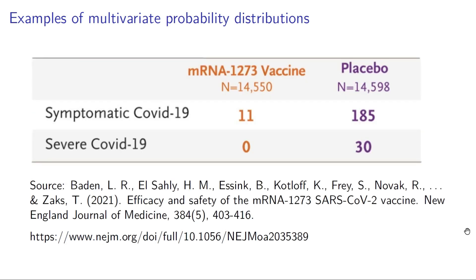The next example is a treatment group that received the Moderna COVID-19 vaccination — about 14,550 individuals — and a similar number of individuals were in the study in the placebo group, meaning they did not take the active ingredient of the vaccine.